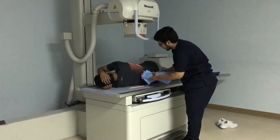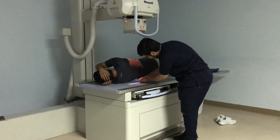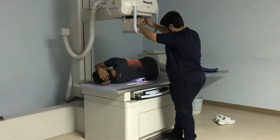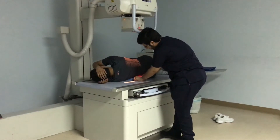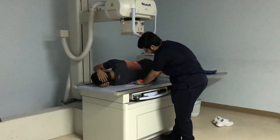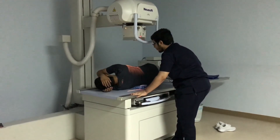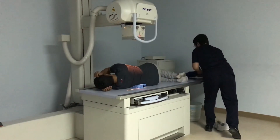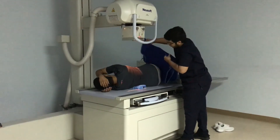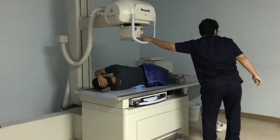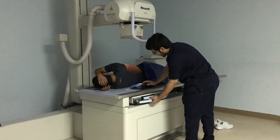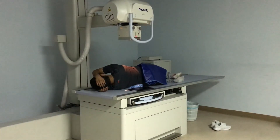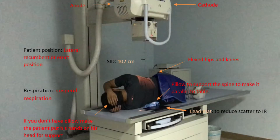In addition, he puts a support for the waist so that the entire spine is parallel to the table. He collimates on two sides of anatomy, 4 if possible, and shields the gonad with a lead mat placed behind the patient to reduce scatter radiation to the image receptor. Finally, he tells the patient to suspend respiration after full inspiration and goes further for the exposure. These are the pictures that demonstrate the previous examination.